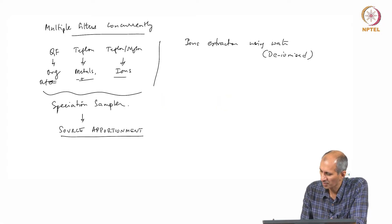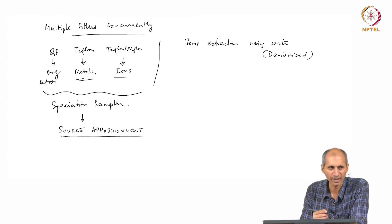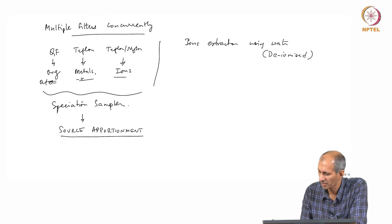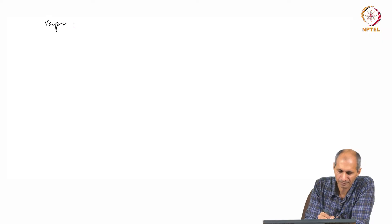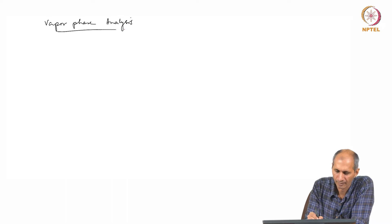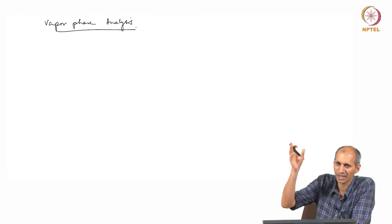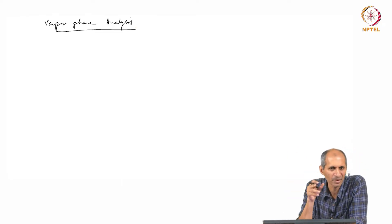This is for PM. What about vapor? There's a bunch of things we talked about for sampling of PM using impactor and all that. How do we do vapor phase analysis? Vapor phase, but in the atmosphere we have everything vapor phase and PM. We only want vapor phase.